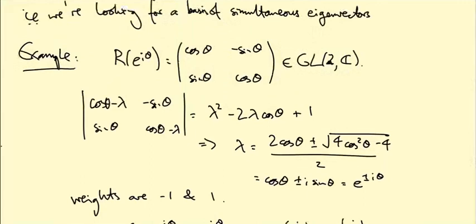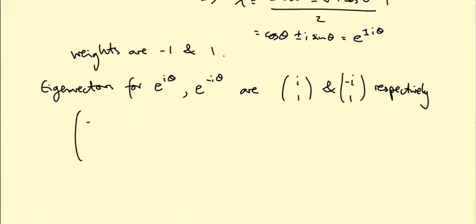the matrix, which was formerly cos θ, -sin θ, sin θ, cos θ, becomes e^{iθ}, 0, 0, e^{-iθ}. So that's R(e^{iθ}) in this basis.